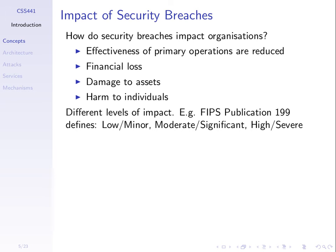What goes wrong if the security of a computer system fails? We have a breach of security — someone performs an attack and compromises the system. There are different levels of impact. If we think of an organization like a company or university that uses computer systems for their business, there are various impacts of security breaches.